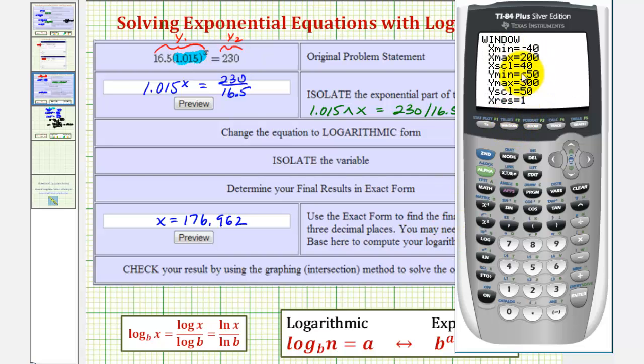And I've already made these adjustments. You may want to pause the video to review these. But notice how the x maximum is more than 176.962, and the y maximum is more than 230. So now if I press graph, we want to find the x-coordinate of this point of intersection here. So if we press second trace for calculate, we want option five for intersection. So we'll press five. Because we only have two graphs on the coordinate plane, we can press enter three times. And notice how this x value here does verify that our solution is correct. I hope you found this helpful.